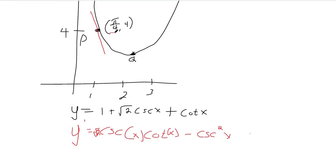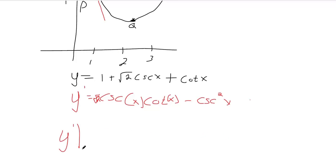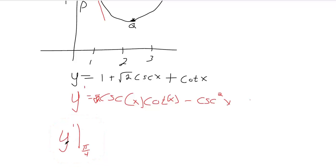We want to know what the derivative is when x equals pi over four, so we want to evaluate the derivative when x equals pi over four. I've seen this shorthand notation — it's saying the derivative of y when x is pi over four. You don't necessarily have to write all that out, but I wanted to leave a note to remind myself that this is the derivative when I've plugged a certain value in.